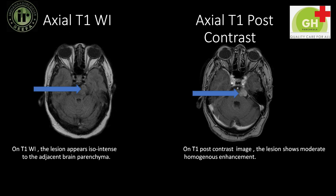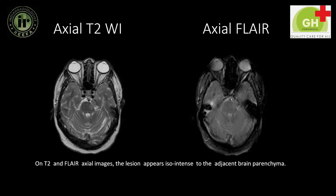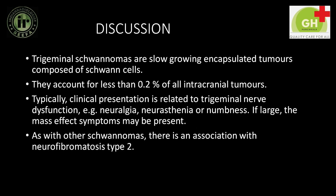On T1 weighted imaging, the lesion appears iso-intense to the adjacent brain parenchyma. On T1 post-contrast image, the lesion shows moderate homogenous enhancement. On T2 and FLAIR axial images, the lesion appears iso-intense to the adjacent brain parenchyma.